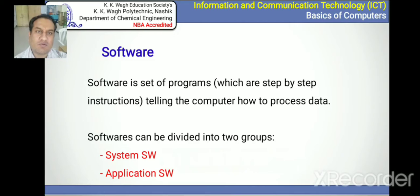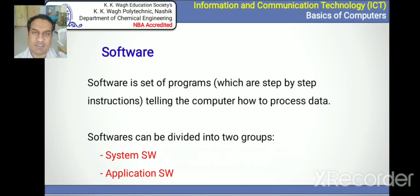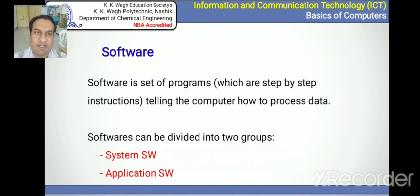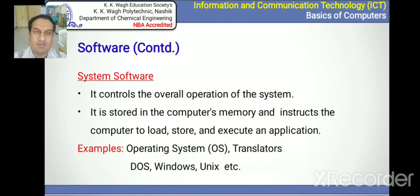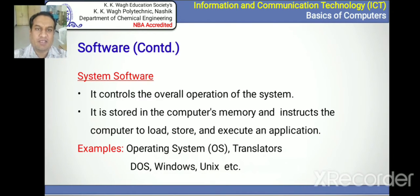The main element is software. Software is a set of programs that tell the computer how to process the data. There are two types of software: system software and application software. System software controls the overall operation of the system; it is stored in the computer's memory and instructs the computer to load, store, and execute applications.